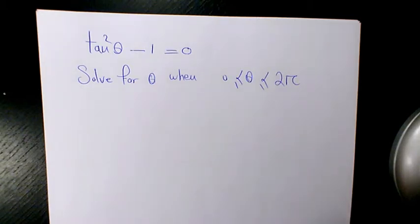What's up guys, this is Massey. Welcome to another video. In this video I want to solve one trigonometric equation, and it is tan²θ - 1 = 0, and we need to solve it for θ when